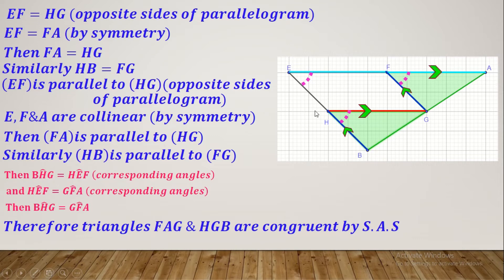Alternatively, instead of corresponding angles, we can use alternating angles with angle HGF. Another approach: we can directly say these two angles are equal since their sides are parallel side by side. The first side HG is parallel to FA, and the second side HB is parallel to FG, so angles BHG and GFA are equal — parallel sides.